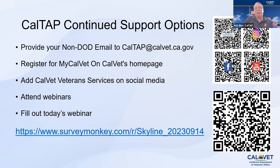So I mentioned our continuum of care and continued support and how we want to stay connected with you. Here are some highlights on ways to stay available and how we can access continued care for you. Provide that non-DOD email to caltap@calvet.ca.gov. You can also register for MyCalVet on our homepage, and then add social media on your social media platforms for veteran services.